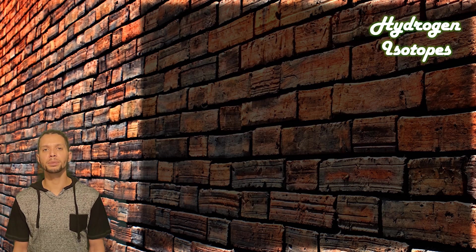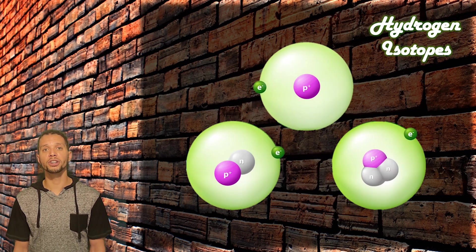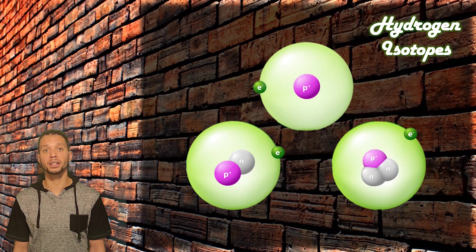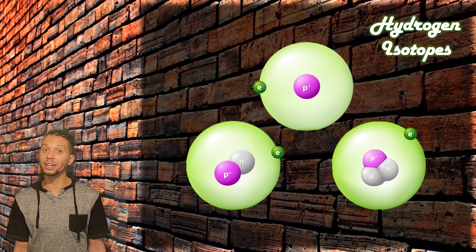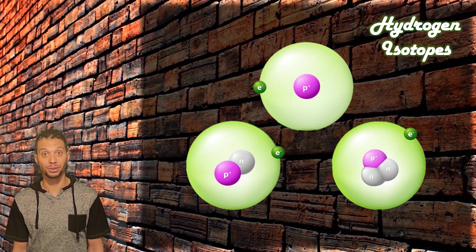A common example of some isotopes of an element are the hydrogen isotopes. In the world, there are three versions of the element of hydrogen, and each version has a different number of neutrons in it. But remember, it's hydrogen, so we know that the number of protons in each version is 1, which is the atomic number of hydrogen.